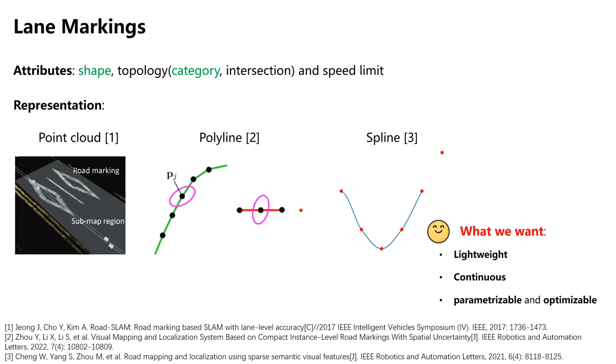In this work, we focus on the lane markings on the road surface, including their geometric shapes, and maintain their categories, such as solid or dashed lines.